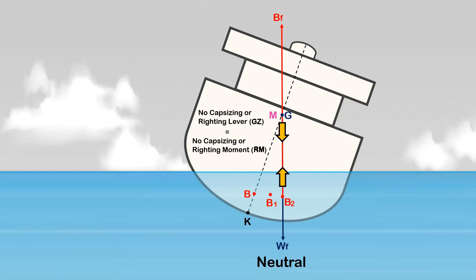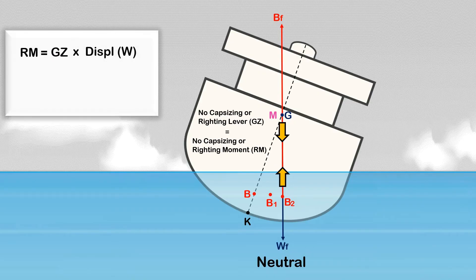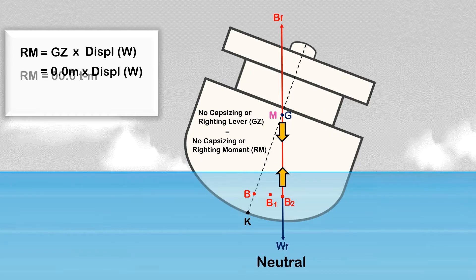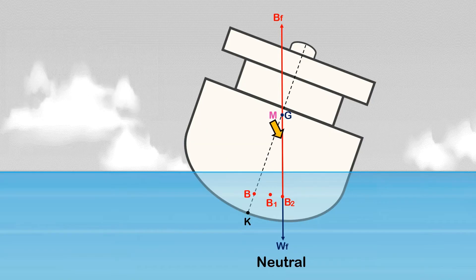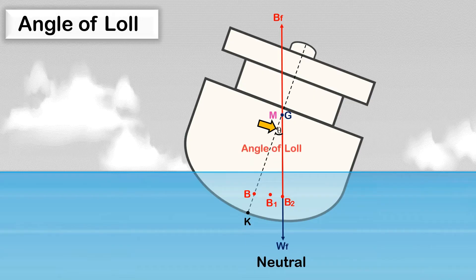If there is no righting or capsizing lever, there is no moment that will bring the ship back to her upright position, and no moment that would tend to heel her further. The righting moment equals GZ times ship displacement. In this case, the righting lever GZ is zero, so the righting moment is also zero — that is why the ship will remain in this position if no external forces are applied. The angle formed between the vertical line of force and the ship's centerline is called the angle of loll.